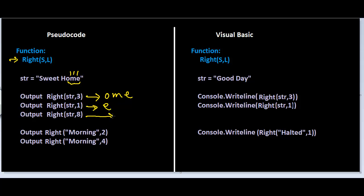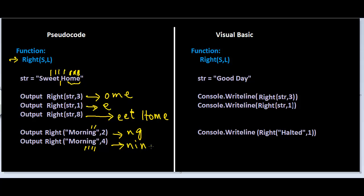When we execute this instruction, only 'e' is going to be output. When we execute this instruction, the first eight characters from the right side are extracted: one is 'e', two is 'm', three is 'o', four is 'h', five is a blank space, then six, seven, and eight. So this is what is shown on the screen — even the blank space in between is counted. For the next one, two characters from the right side give us 'NG', and four characters gives us 'NING'.